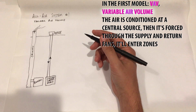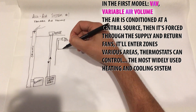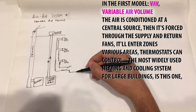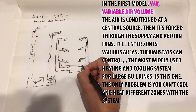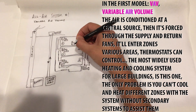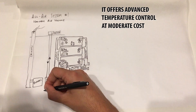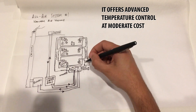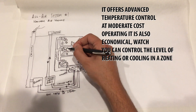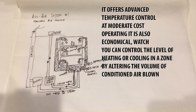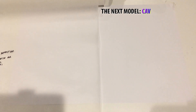With VAV, air enters various zones and thermostats control the temperature. It is the most widely used heating and cooling system for large buildings. The only problem is you can't cool and heat different zones simultaneously without secondary systems. It offers advanced temperature control at moderate and economical operating cost. You control the level of heating or cooling in a zone by altering the volume of conditioned air blown.